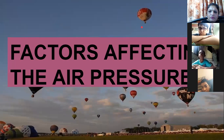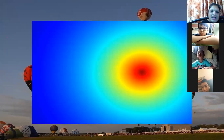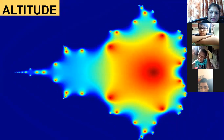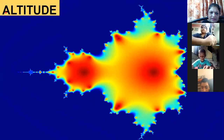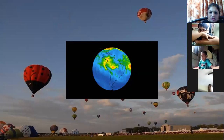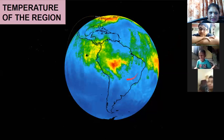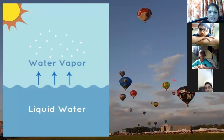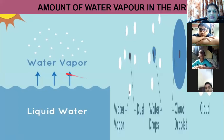Then, moving ahead, we saw the factors affecting air pressure. The first factor was altitude — the height. As you move away, air becomes thinner. The second factor is the temperature of the region. The third factor affecting air pressure is water vapor — the water content in the air. So the amount of water vapor in the air is the third factor.